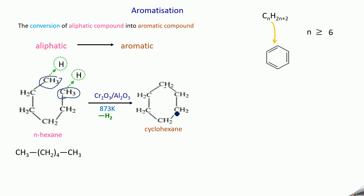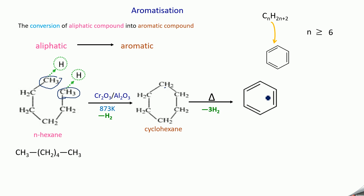This cyclohexane has 6 carbon atoms. You remove one hydrogen from each of the 6 carbon atoms — totally 6 hydrogen atoms are removed as H2 gas on heating. Each CH2 becomes CH, and you get benzene, which is resonance stabilized. So this is what we call aromatization — the aliphatic compound N-hexane is ultimately converted to the aromatic compound benzene. So we have completed the chemical properties of alkanes.